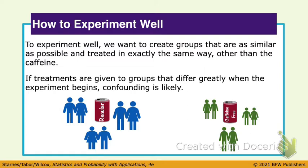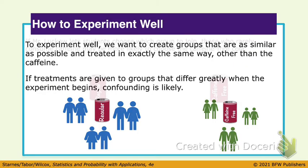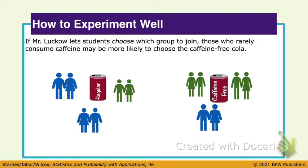To experiment well, we want to create groups that are as similar as possible and treat them in exactly the same way other than the one thing we're testing, which is the caffeine. If treatments are given to groups that differ greatly when the experiment begins, then we're going to have confounding. For example, what if everybody in the regular caffeine group already drinks a lot of caffeine and the other group doesn't? Their caffeine tolerances are different, and that's going to cause a problem. So I want to make sure I mix them up.